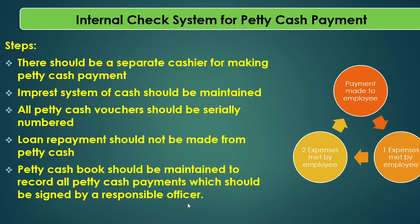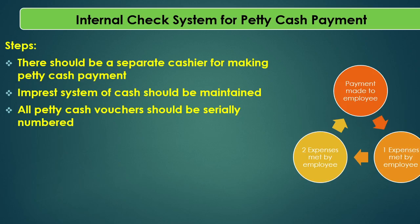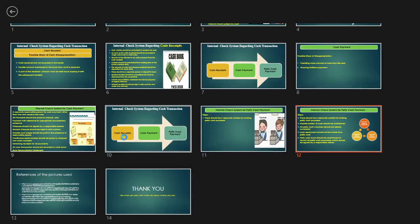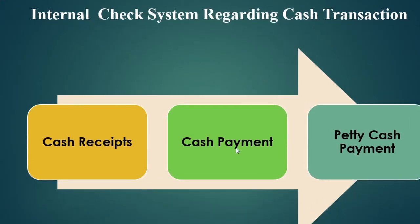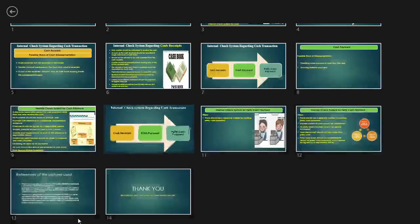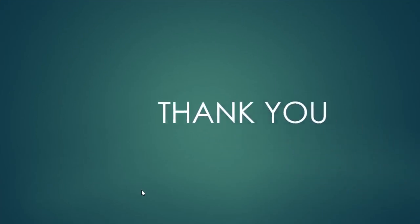I hope you understood the internal check system regarding cash transactions. Here we have seen three major important aspects: the internal check system for cash receipts, cash payments, and petty cash payments. In the first two cases we saw the chances of misappropriation, and the second part explained the tips to incorporate into the check system for cash transactions. Hope you understood the video. Thank you for joining — take care and happy learning.